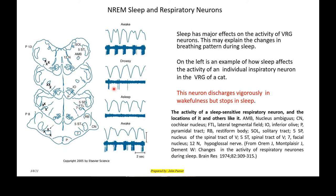When you are drowsy, the neuron seems to be depressed somewhat. And when you're asleep, this neuron actually turns off. This is in the ventral respiratory group — that's why we lose our drive to the phrenic. Then back to wake again to show it didn't just die — it came back. So the neuron discharges vigorously in wakefulness but actually stops in sleep. That tells you that right in the medulla, with the rhythm-generating area and the areas that send the drive down to the spinal cord, these are affected by sleep.